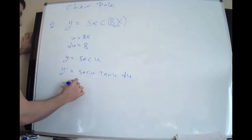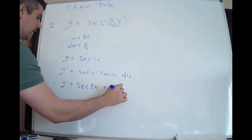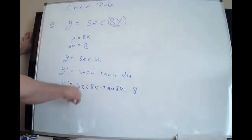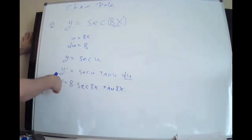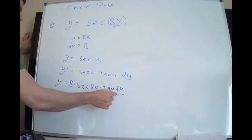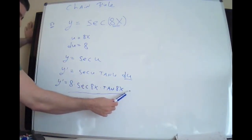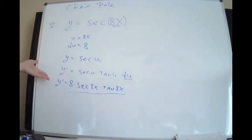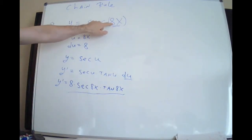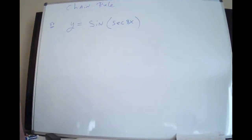Now put 8x back in for u in the secant and tangent terms, and put the 8 from du in the front. I prefer to move the 8 to the front — I won't be upset if you leave it at the end, but I will be annoyed if you multiply it and write 64x. Moving the 8 to the front avoids that. So the derivative of sec(8x) is 8 sec(8x) tan(8x).